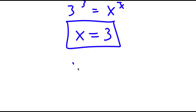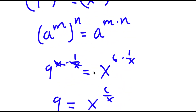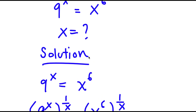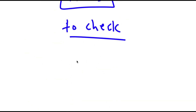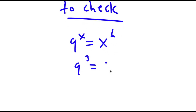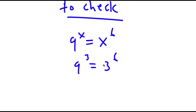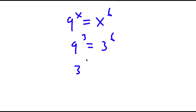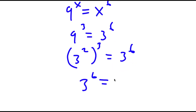So now to check: my original equation was 9 to the power of x equals x to the power of 6. I get 9 to the power of 3 is equal to 3 to the power of 6. And 9 is the same thing as 3 squared, so I get 3 squared to the power of 3 is equal to 3 to the power of 6, which is 3 to the power of 6 equals 3 to the power of 6. Verified.